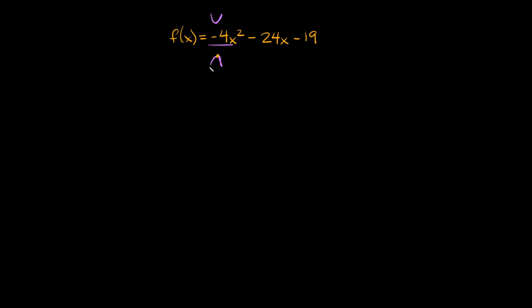It's kind of like a roller coaster — you're going up and up and up on the roller coaster and then the tallest point right there is the maximum point, and then you come back down this way screaming your precious little face off. So since we have a maximum point and we know that the maximum point is at the vertex, all we really have to do is find the vertex.